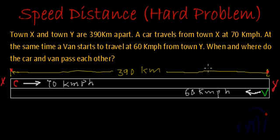So what we have to find? We have to find when, that means time, and where, that means distance at least from one point. Do the car and van pass each other.